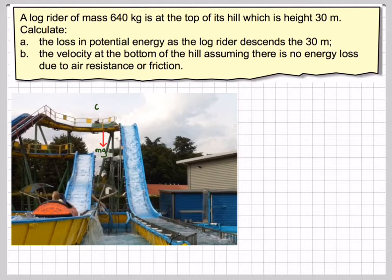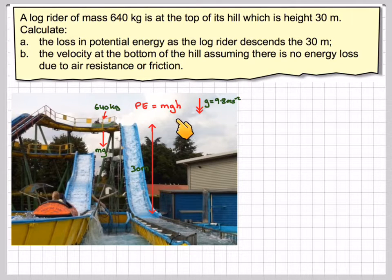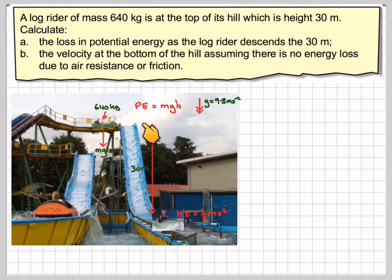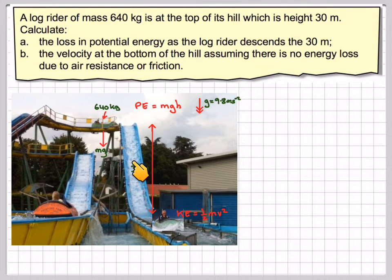Here's a diagram of the situation. At the top it has potential energy, PE = MGH. At the bottom, when it gets there, it has kinetic energy, one half mv squared. The assumption is that energy is conserved, provided there's been no energy loss to air resistance or friction, which would obviously probably happen in reality.